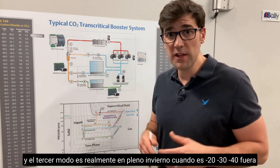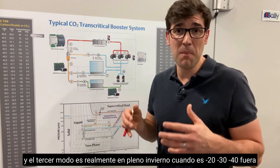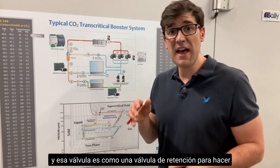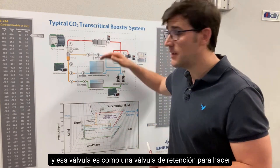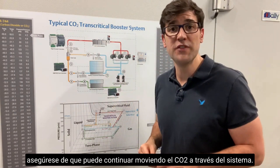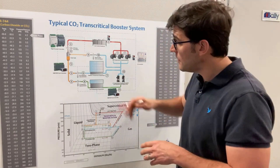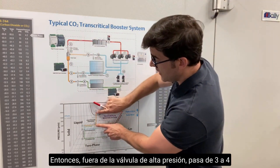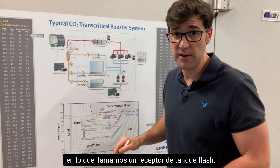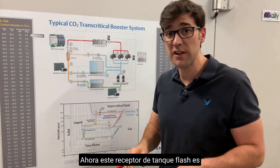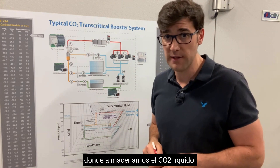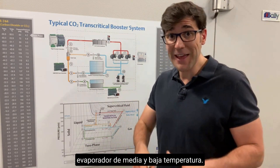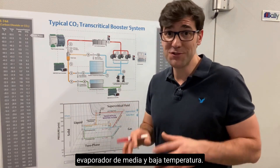The third mode occurs in the middle of winter at minus 20, minus 30, or minus 40 outside — the valve acts as a holdback valve to make sure you can continue to move CO2 through the system. Out of the high pressure valve, from three to four, you go into what we call a flash tank receiver. This is where we store the CO2 liquid, and that receiver feeds both the medium and low temp evaporators.